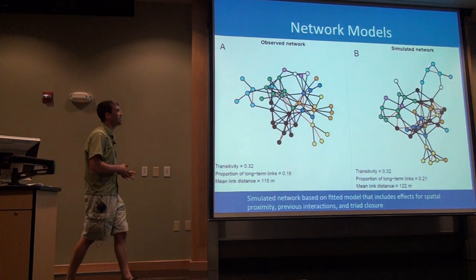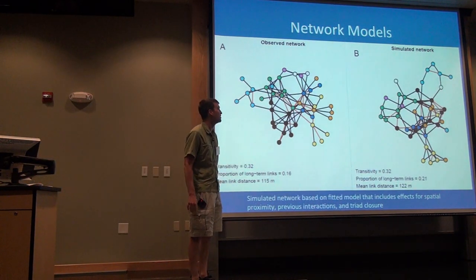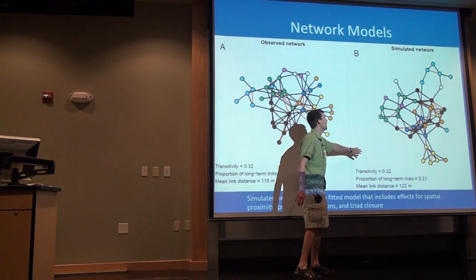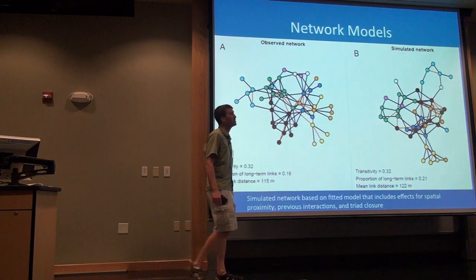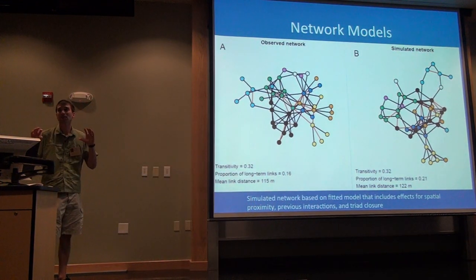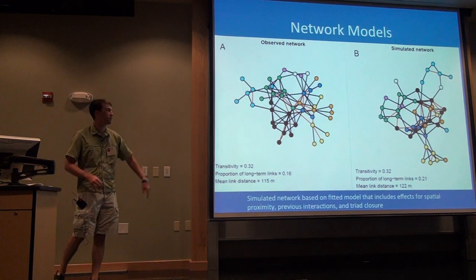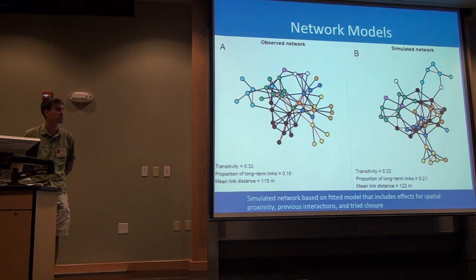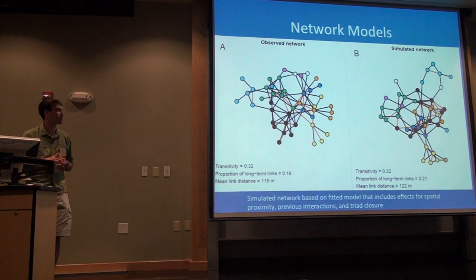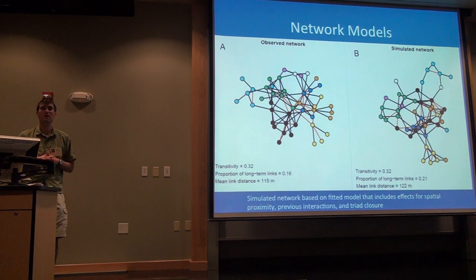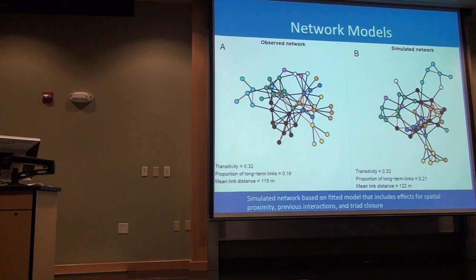Comparing to the fitted simulated networks — it turns out we capture reality very well. The simulated model produces the same types of patterns: the same colors interacting mostly with their own color, a very similar number of long-term links at about 15 to 20%, and the same amount of triad closure at about 30% of triads closed up. So with these three effects — spatial proximity, long-term interactions, and the friend-of-a-friend triad closure effect — we are able to capture what's going on in these manakin social networks and their cooperation interactions really well.